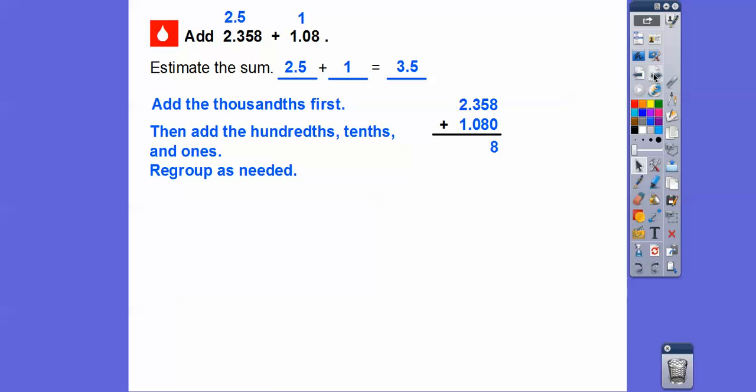So let's add the hundredths, tenths, and ones. So 5 plus 8 is 13. The 3 goes down here, and the 1 goes up here for 13. So it's called regrouping. So we're regrouping the 13, the 1 for the 13 up above the next column to the left. So now we're going to add 1 plus 3, which is 4, and then 2 plus 1 is 3.